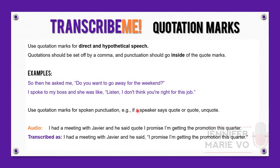Now, quotation marks. First, we will use quotation marks for direct and hypothetical speech. TranscribeMe follows the American style usage of quotation marks — quotations should be set off by a comma and punctuation should go inside of the quotation marks. If you're transcribing for a British company, the punctuation mark would go on the outside. But for TranscribeMe, the punctuation has to go inside of the quotation marks.